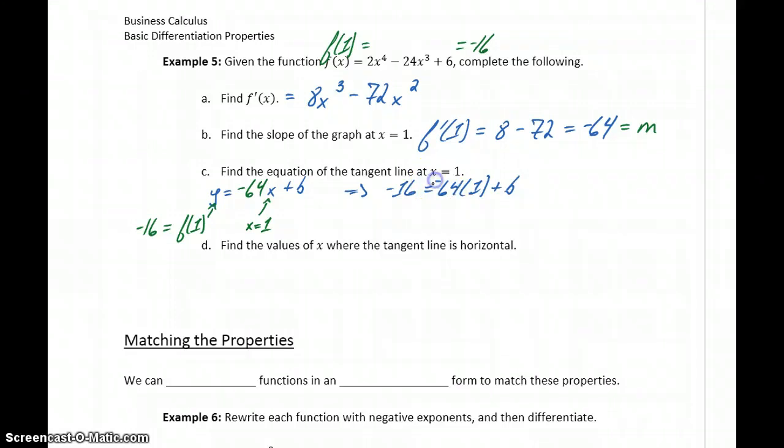Or I'm sorry, that should be negative 64 times 1. So if we add the 64 to both sides, we'll get 48 equals b, which gives us the equation for our tangent line of y equals negative 64x plus 48.